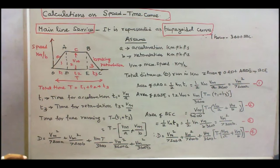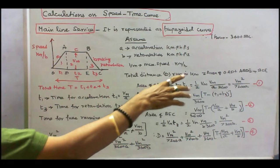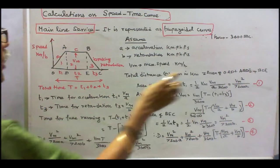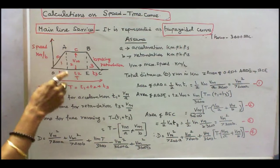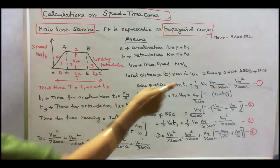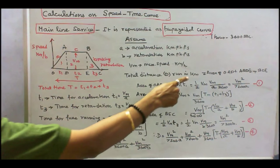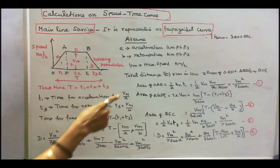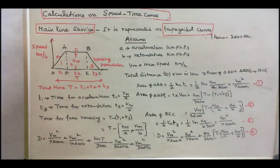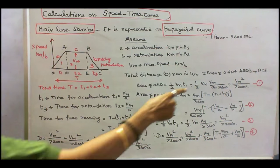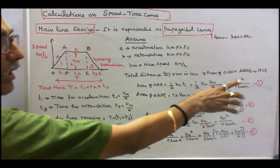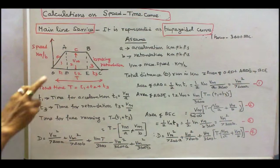Next, find the total distance D (in km) between two stations, equal to the area under the curve. Area of triangle OAD equals half × Vm × T1 = half × Vm × (Vm/A) / 3600, which gives Vm² / (7200A). That is equation 1.